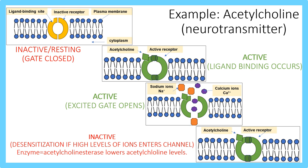Let's look at an example using a neurotransmitter such as acetylcholine. Acetylcholine is a neurotransmitter that transmits a chemical message. Between two nerve cells there is a space called the synapse, where the chemical impulse takes place and requires neurotransmitters to pass on the message. Acetylcholine is involved in muscular functions such as movement, and also brain functions such as learning, thinking and memory.